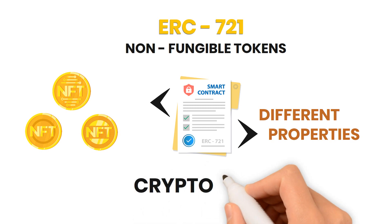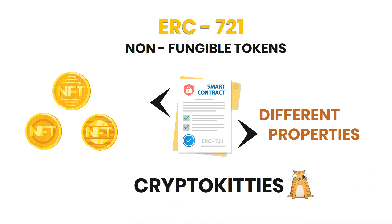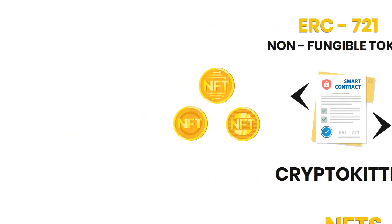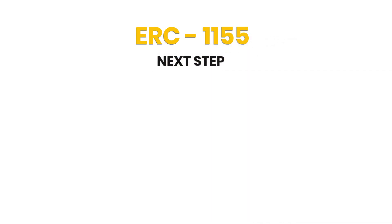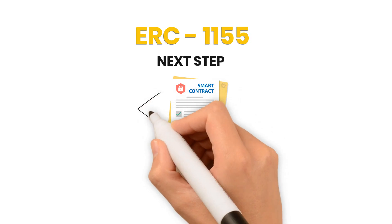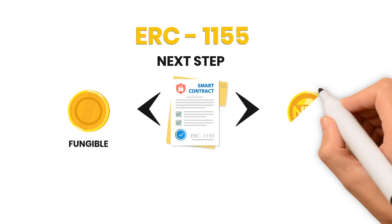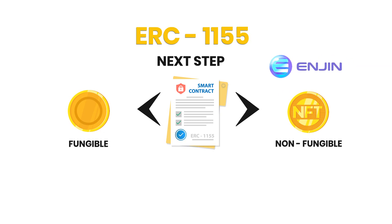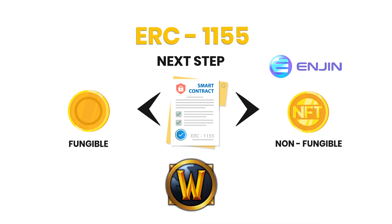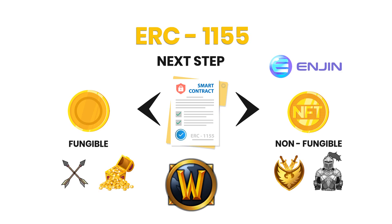ERC-721 allows for creating contracts that can be used to create distinguishable tokens with different properties. A common example of this is the famous CryptoKitties, a game that allows for collecting and breeding virtual kittens. ERC-1155 is the next step in creating non-fungible tokens. The standard allows for creating contracts that support both fungible and non-fungible tokens, and it was created by Enjin, a project focusing on blockchain-based gaming. In many games such as World of Warcraft, a player can hold both non-fungible items — swords, shields, armors — and fungible items such as gold or arrows. This standard allows developers to define both fungible and non-fungible tokens and decide how many of these tokens should exist.